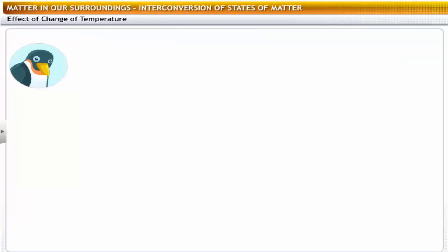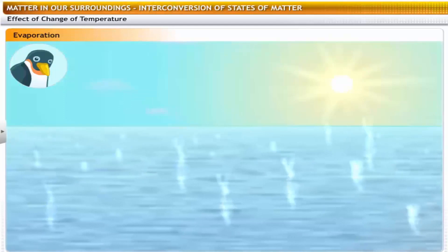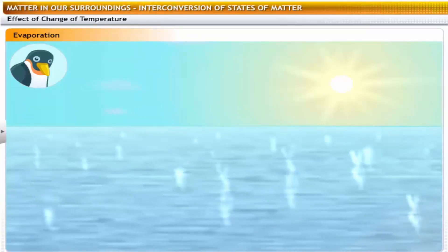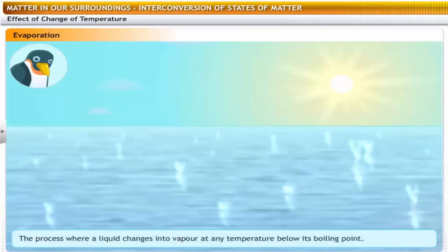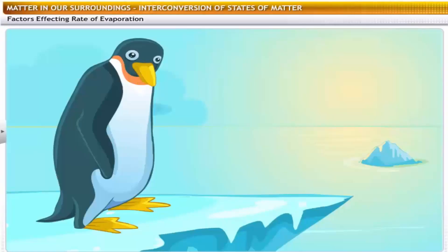But do we really need to heat things to change them from one state to another? Not necessarily. For example, sea water absorbs the heat from the surroundings and vaporizes leaving behind the salt that was dissolved in it. This process is known as evaporation. Thus, a process where a liquid changes into vapor at any temperature below its boiling point is called evaporation. Evaporation occurs only at the surface of the liquid.